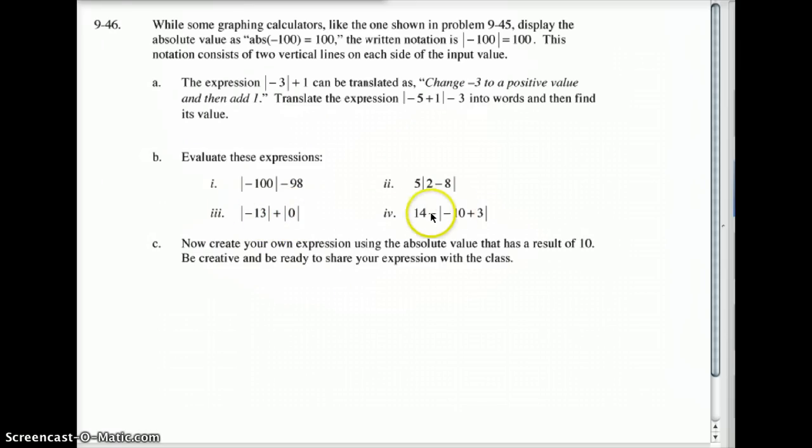And then finally we come up with this one. So, and you want to be careful on this one. We still do the absolute value first. So the absolute value of negative 10 plus 3. Well, negative 10 plus 3 is negative 7. The absolute value of negative 7 is positive 7. Then we do the 14 minus 7, which would be 7. So hopefully that makes sense to you. So let's move on.